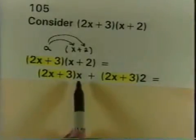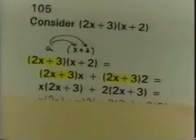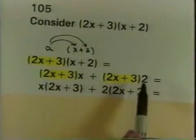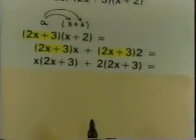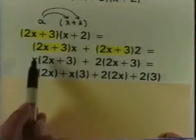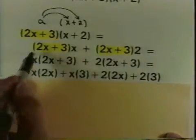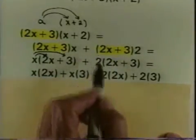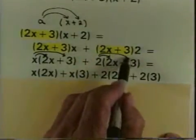By the commutative property of multiplication, I can write 2x plus 3 times x as x times 2x plus 3, and 2x plus 3 times 2 as 2 times 2x plus 3. Applying the distributive property a second time, I have x times 2x plus x times 3. Applying the distributive property a third time, I have 2 times 2x and 2 times 3.